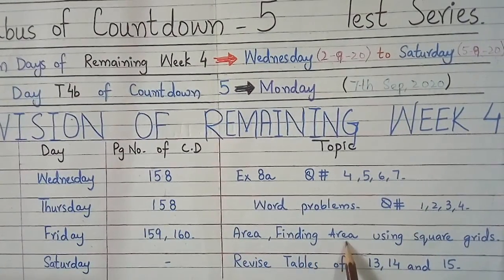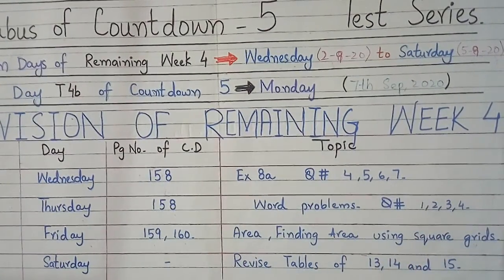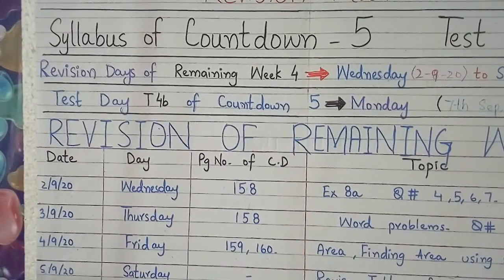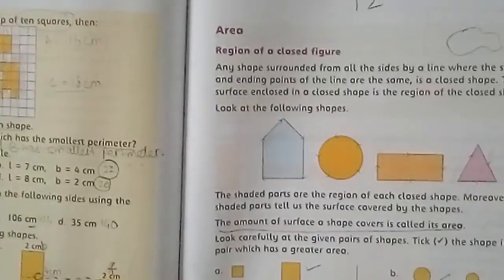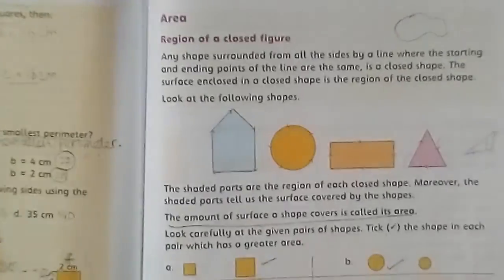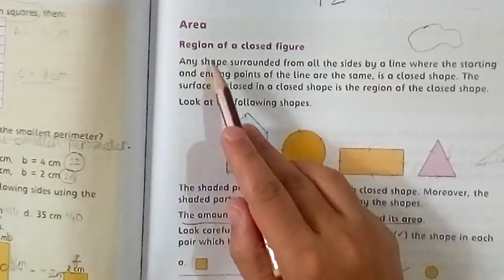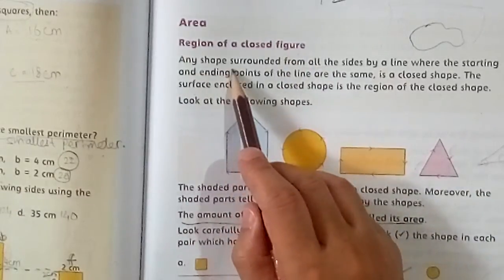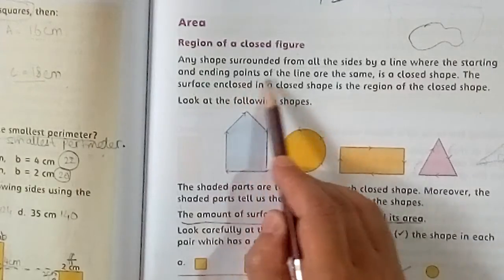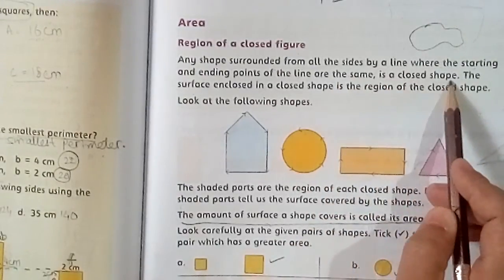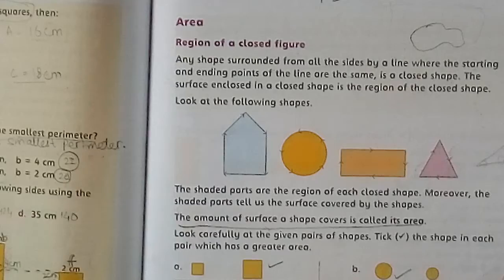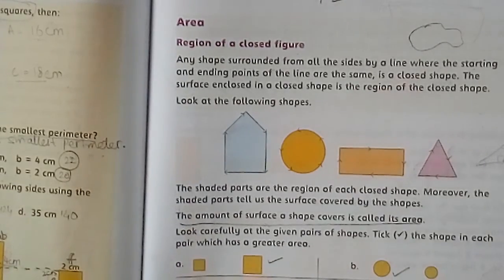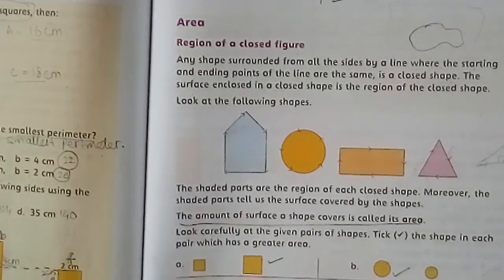The topics we will cover on these pages are: finding area using square grids. Open your countdown books, page number 159. The topic is about area. The region of a closed figure — any shape surrounded from all sides by a line where the starting and ending points of the line are the same — is a closed shape. We have already discussed these topics in vocabulary; today we will discuss them again so that they become clear to you.